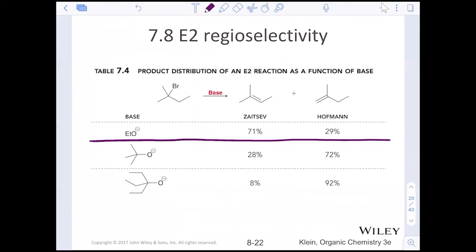And we can kind of see this dividing line of when is too big. So Zaitsev products are favored when you have small bases. This is ethoxide, methoxide, or hydroxide. Once you get past those three, then your base gets very large. And steric hindrance does play a factor on which product, the more substituted or the less substituted alkene, is favorable. So we can actually control the product favored by controlling the size of the base.